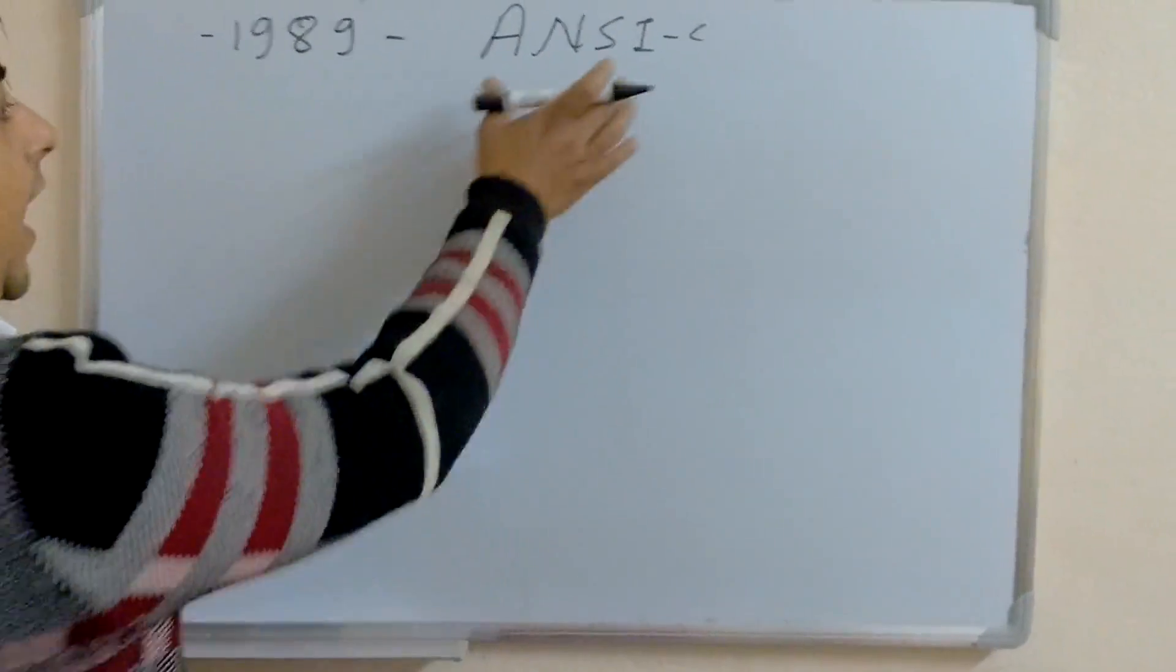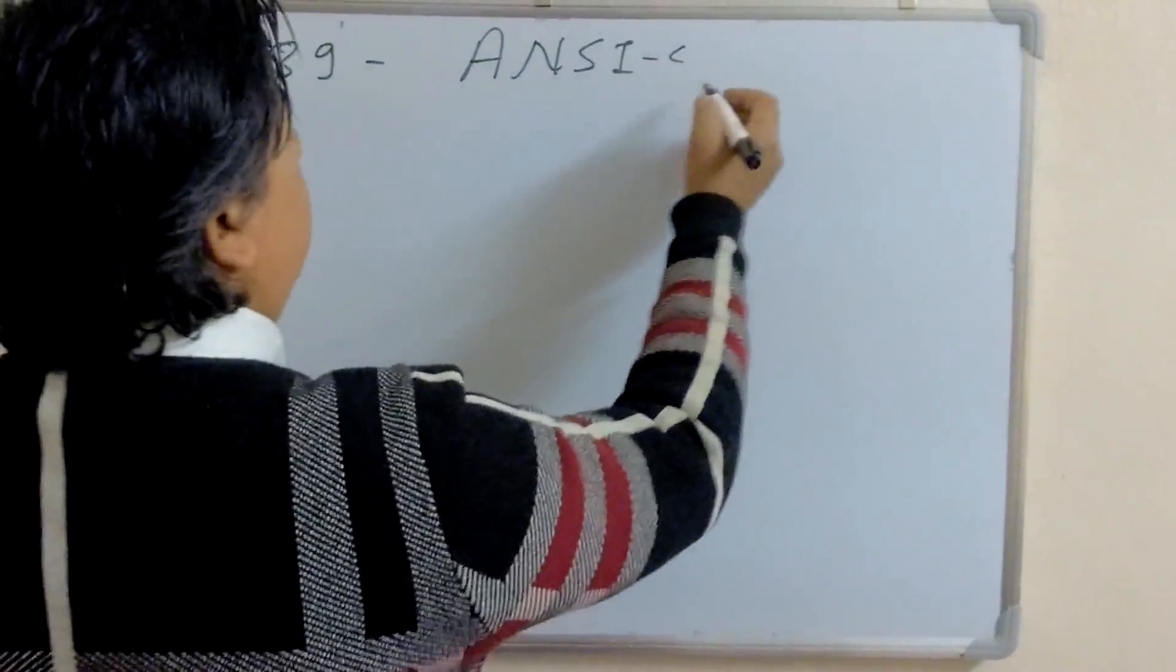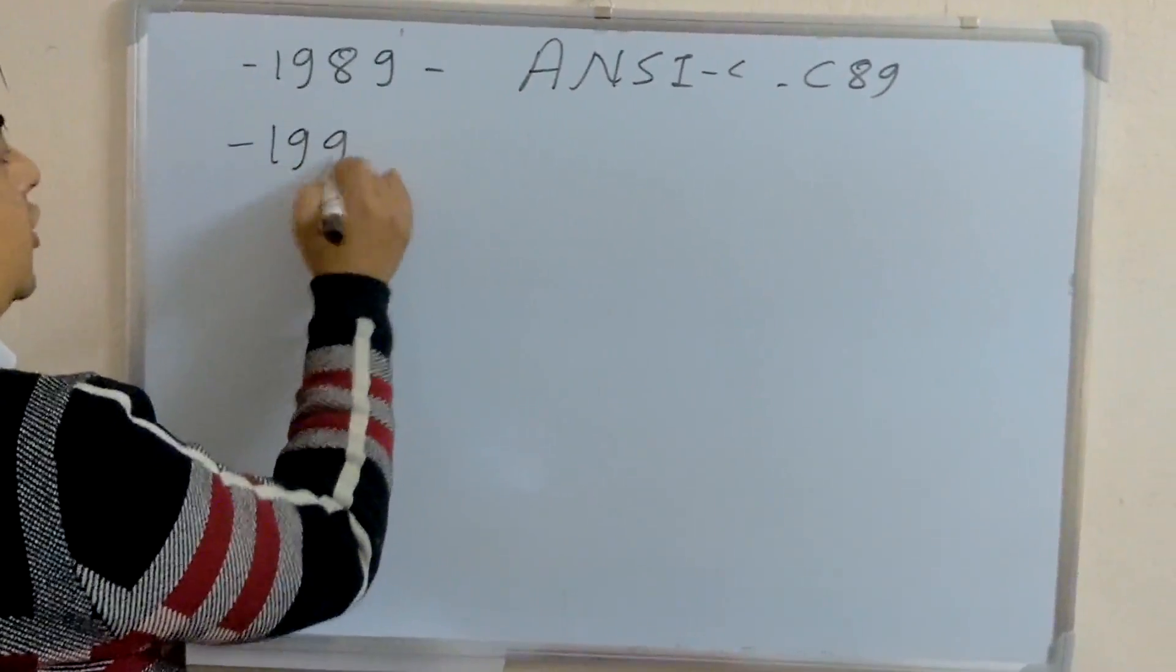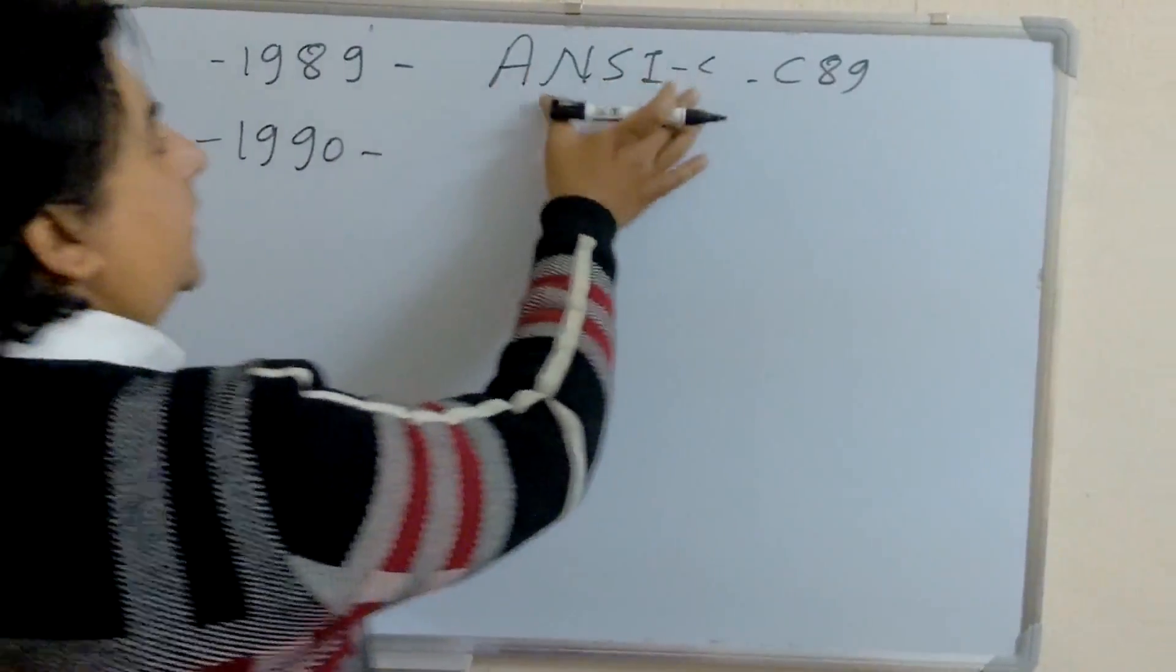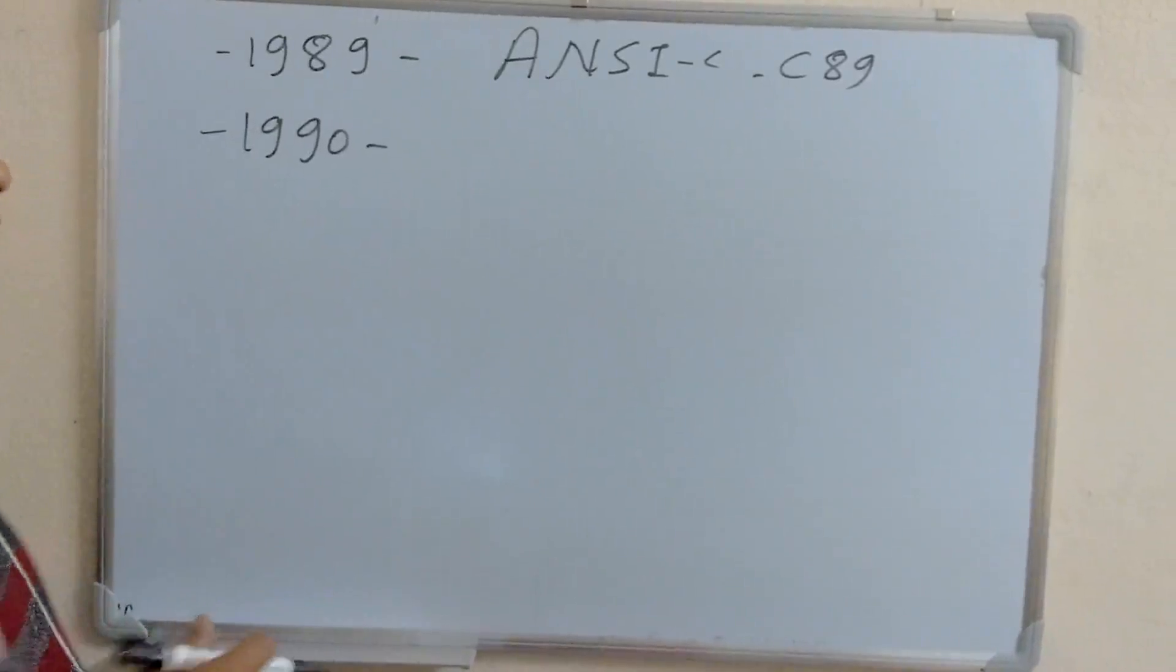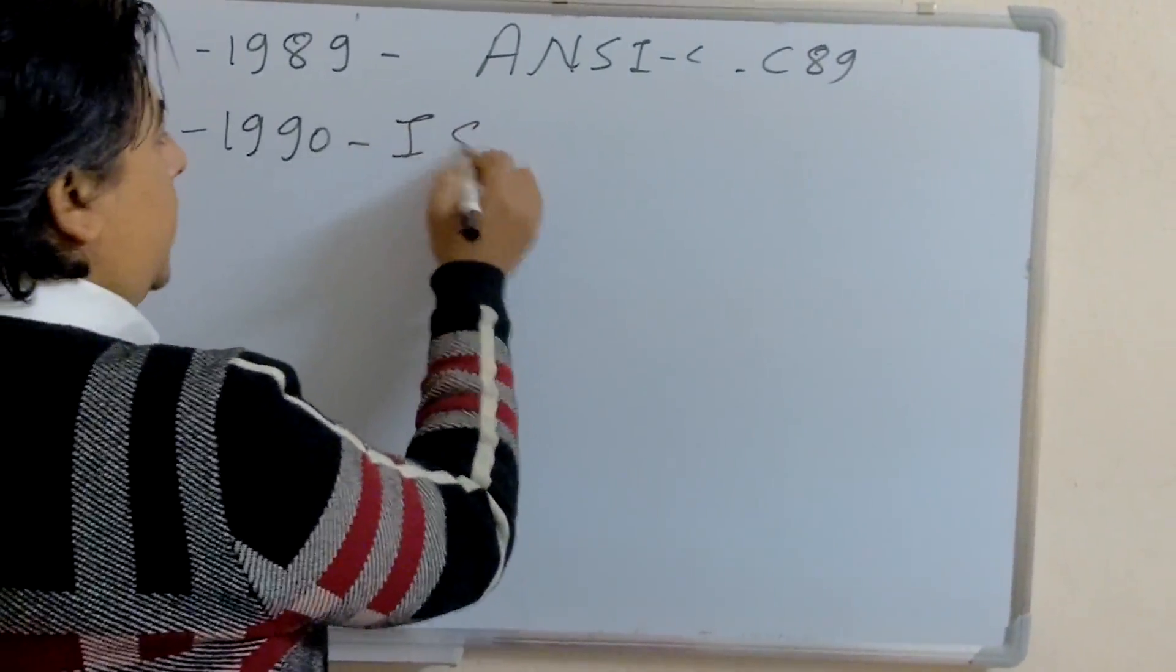This is known as ANSI C, or C89. In 1990, this C language was approved by ISO, known as C90.